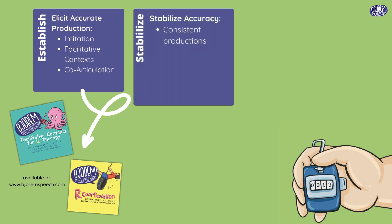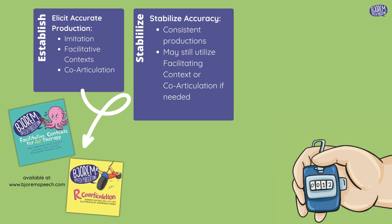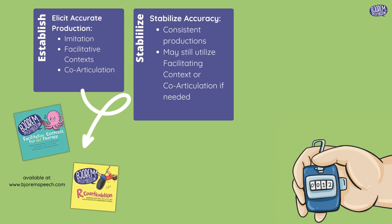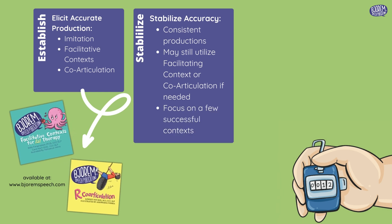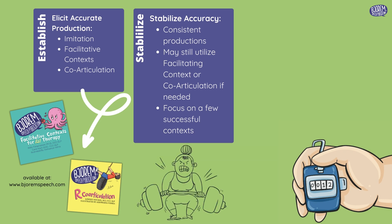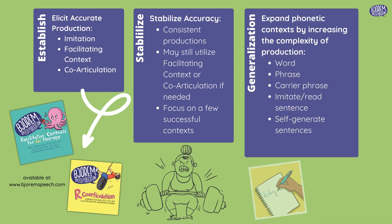To stabilize an accurate production of an R, you want to focus on getting consistent productions. During this time, you may still be utilizing the facilitative context deck and or the R co-articulation deck. Find which R contexts are most stimulable for your client and start there. You may focus on a few successful contexts using the client's strengths to then generalize to other R contexts. Varying word position and increasing complexity by moving from word level to phrase and sentence level will also help with generalization of the R sound.